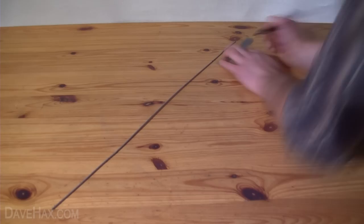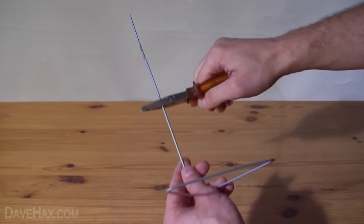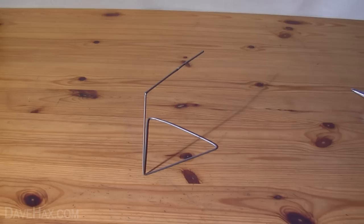Next we need to bend it into a triangle at the points we've marked. Then bend up the 12cm upright and the 12cm support bar.